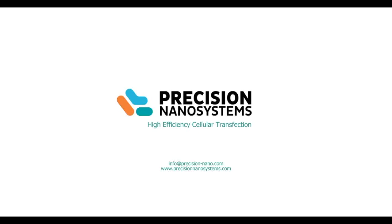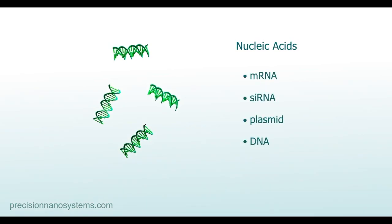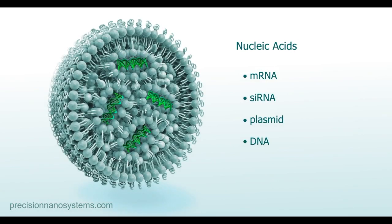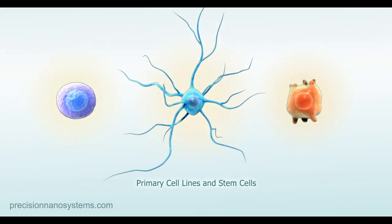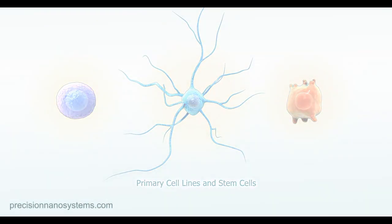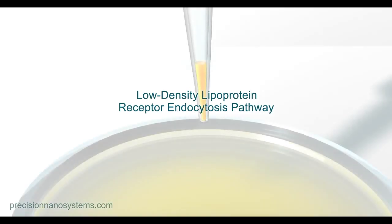Precision Nanosystems Transfection Kits encapsulate nucleic acids in proprietary lipid nanoparticles that mediate high transfection efficiency in difficult-to-transfect cells, in vitro and in vivo. Our lipid nanoparticles efficiently transfect primary cell lines and stem cells by exploiting the low-density lipoprotein receptor endocytosis pathway.